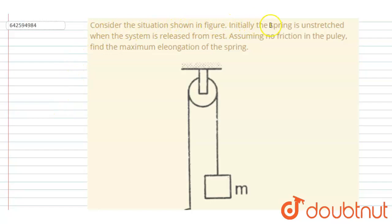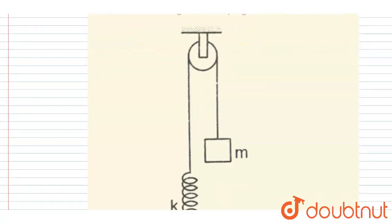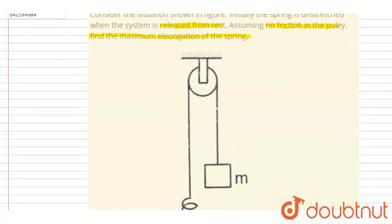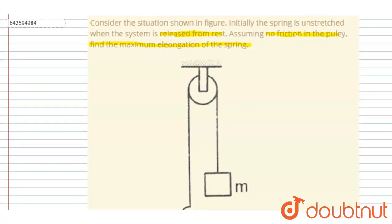Initially the spring is unstretched when the system is released from rest. Assuming no friction in the pulley, find the maximum elongation of the spring. So it is released from rest, and when this extension in the spring will be maximum, the block will have zero velocity.